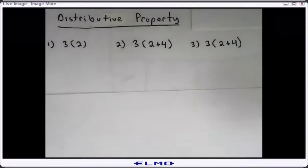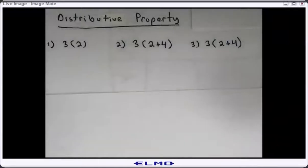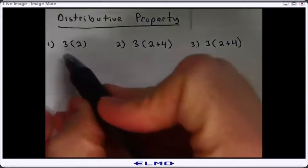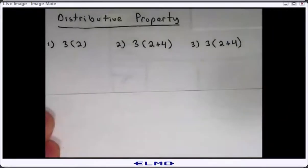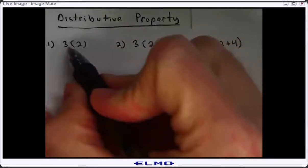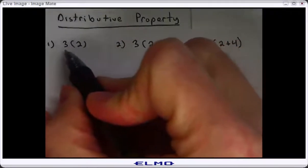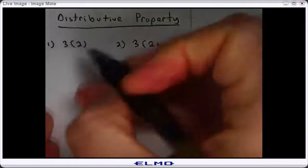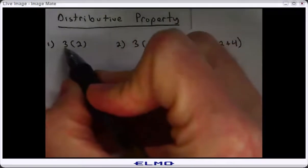This lesson is on the distributive property. Distributive property is multiplication. You'll see on number one, I have three times two, because when you have a number beside parentheses, that is understood to be multiplication.